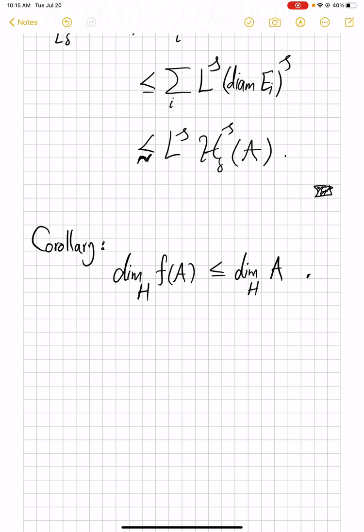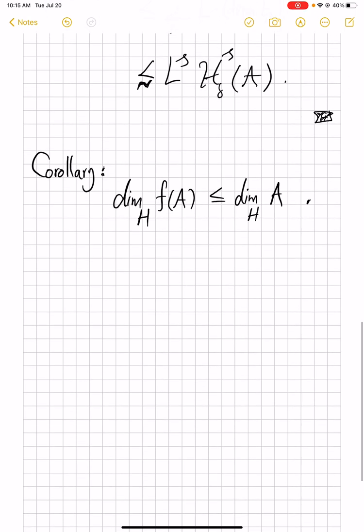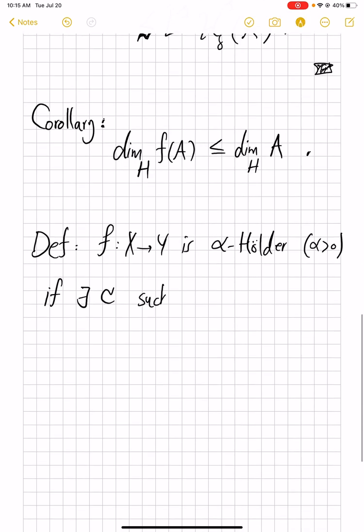Now, we want to also do similar analyses on Hölder maps. So let's recall their definition again. f from X to Y is alpha Hölder, where alpha is a positive real number, if there exists a constant such that, similar to Hausdorff measure, you want to control how far the image of pairs of points can get. This time, you can control only up to a power of the distance in the domain.